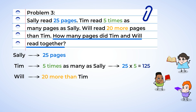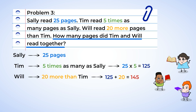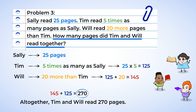Next, Will read 20 more pages than Tim. This phrase more than means addition, not multiplication. 125 plus 20 is 145, so Will read 145 pages. So how many pages did Tim and Will read together? Since it is the number that Tim and Will read combined, we are going to add those two numbers together. 145 plus 125 equals 270. Altogether, Tim and Will read 270 pages.